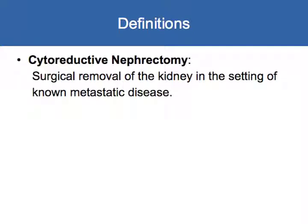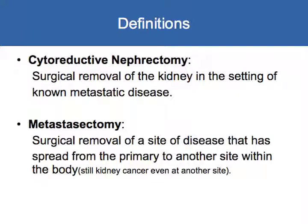Cytoreductive nephrectomy is the surgical removal of the kidney in the setting of known metastatic disease. Metastasectomy is removal of a site of disease that has spread from the primary to another site within the body — and it's still kidney cancer even though it's at another site, which is a common point of confusion.